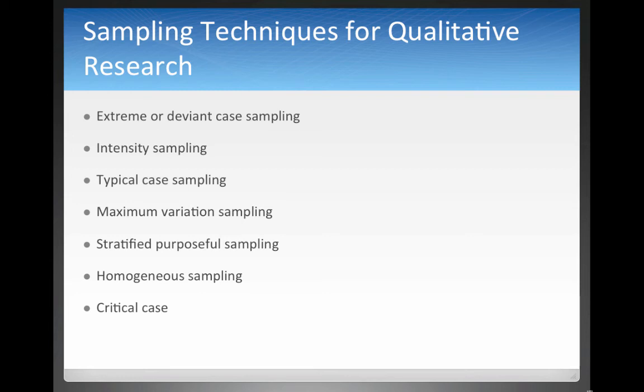Stratified purposeful sampling is similar to some quantitative techniques in that you stratify and then purposefully pick participants at each level. A critical case sample is when you look at something of particular importance — for example, you might want to interview students who were present during the Columbine shooting. That's a critical case.